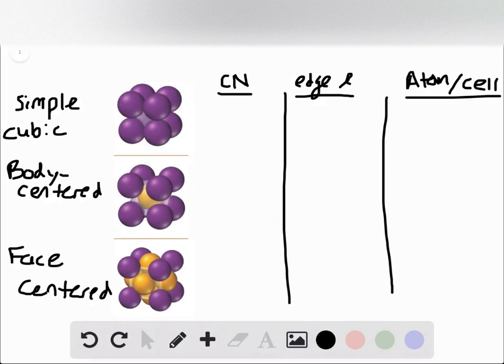So we consider each of the cubic lattices listed in the previous problem. I have them written out here: simple cubic, body-centered, and face-centered, along with a screenshot from the book giving an easy depiction of each.